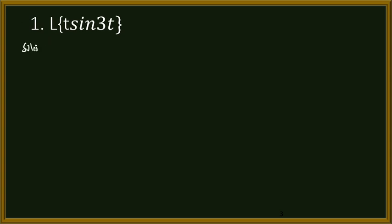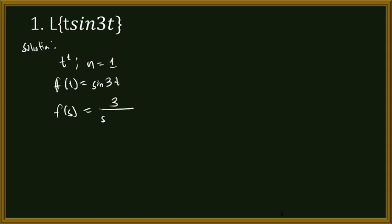We have the Laplace transform of t sine 3t. Solution: first we need to find our n. Our t here is raised to the power of 1, so our n will be equal to 1. Then our f of t is sine 3t, and F of s of that is 3 over s squared plus 9, using the formula k over s squared plus k squared. So because our n is equal to 1, we just get the first derivative of our F of s.